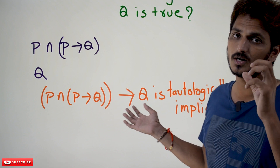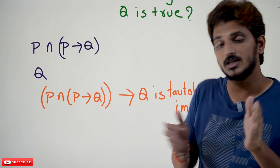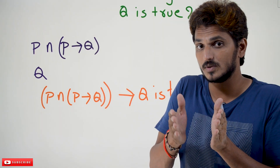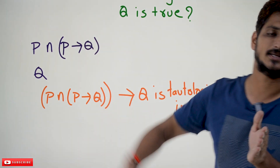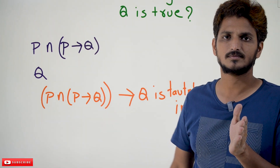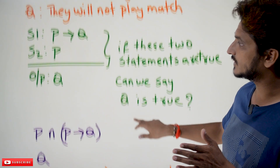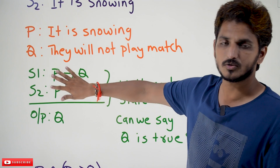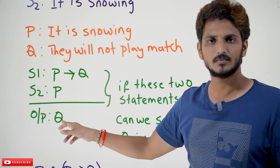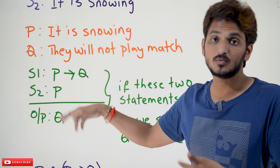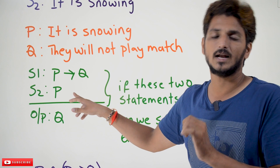This is the point you need to understand. If you understand this, it is easy to solve the examples on inference rules which we are going to discuss in our coming classes. If someone says that these two statements are true, from those two statements you can say that the conclusion is going to be true — and this is what we are going to use in our coming classes.